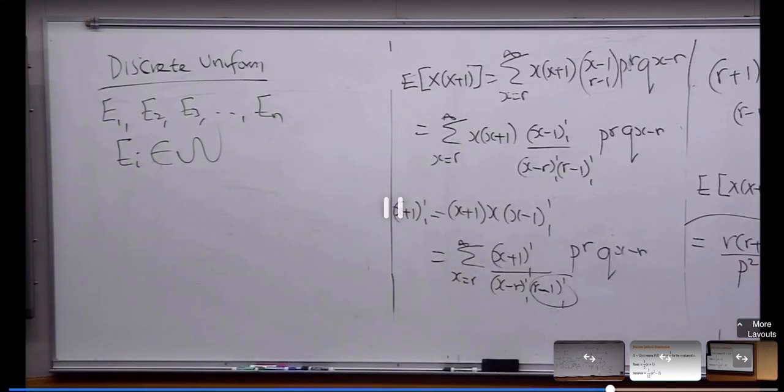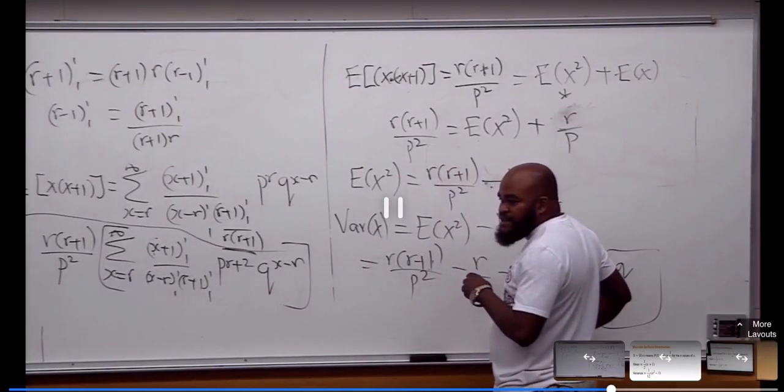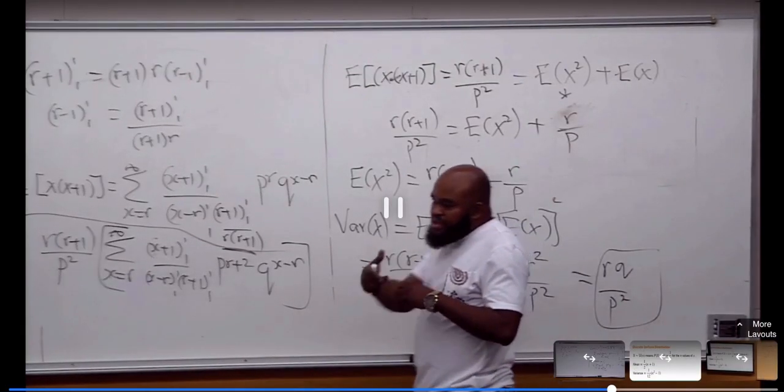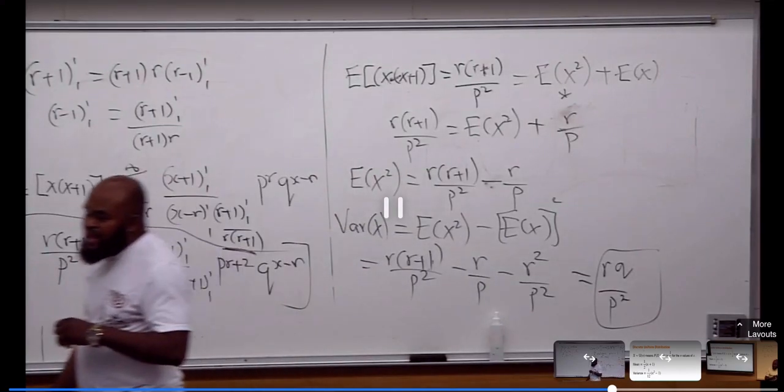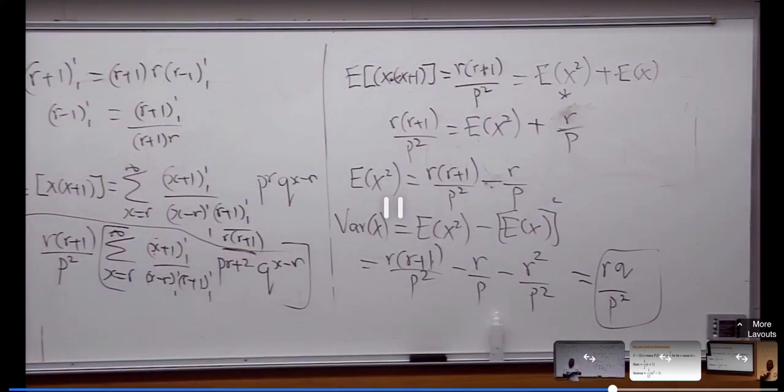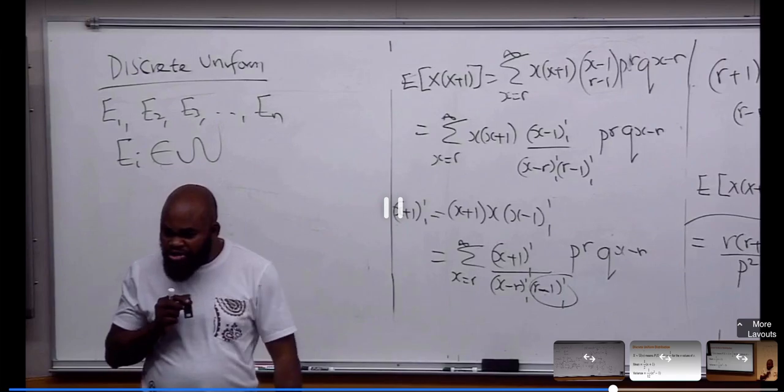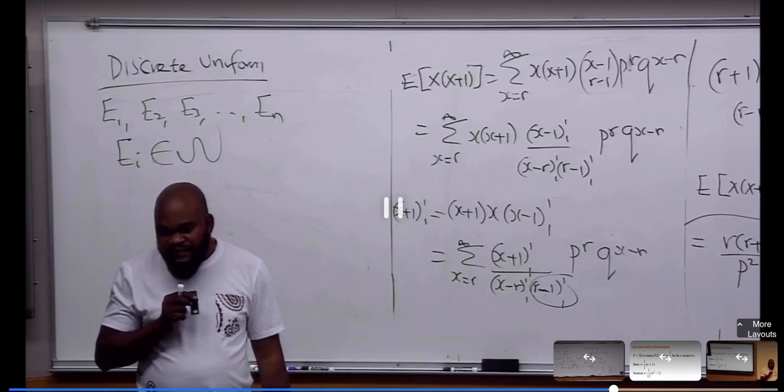Because you're actually going to simplify this P. And P is 1 minus Q. Along the line, Q is going to come. Because P is 1 minus Q.